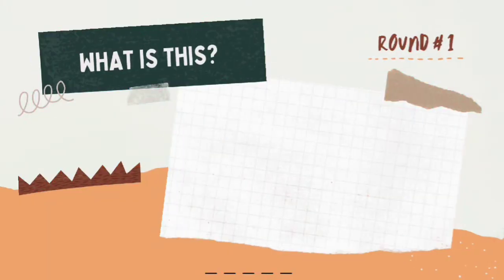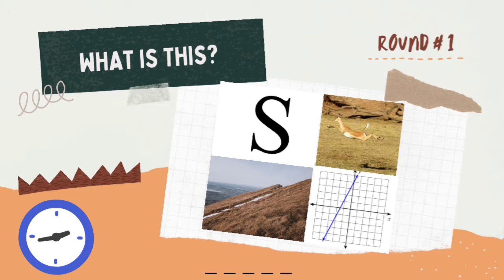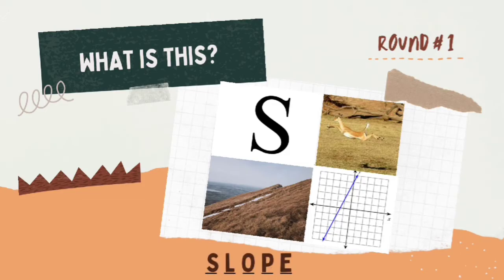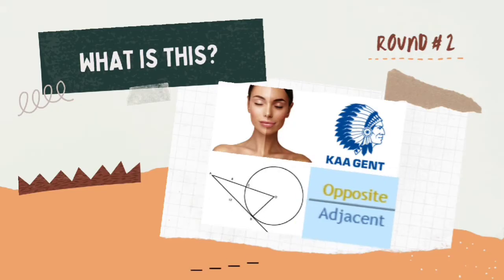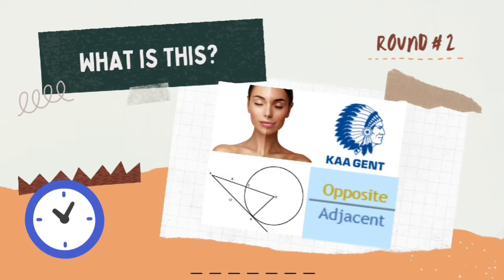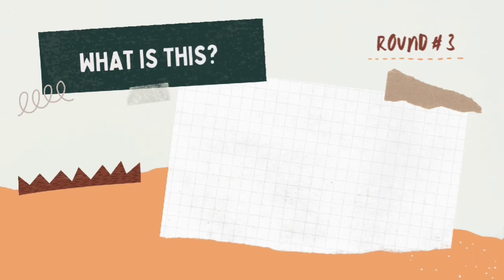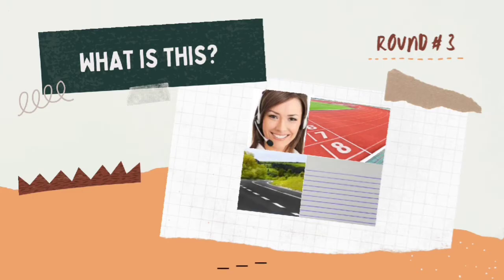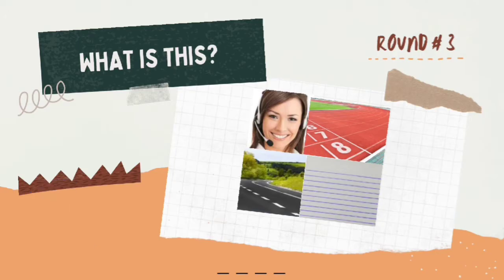Round number 1. What is this? You have 10 seconds to answer. The answer is slow. Round number 2. What is this? Your 10 seconds starts now. The answer is tangent. And lastly, round number 3. What is this? Your 10 seconds starts now. The answer is line.